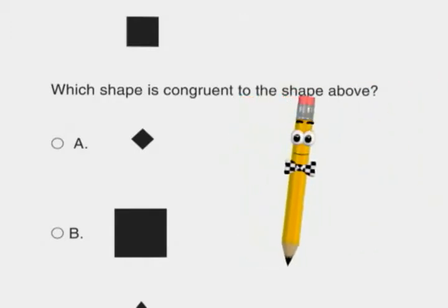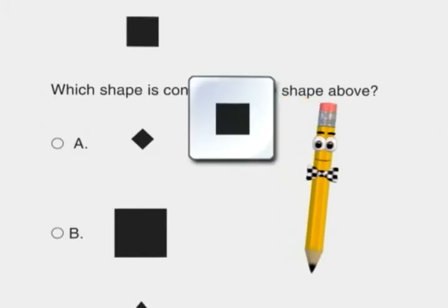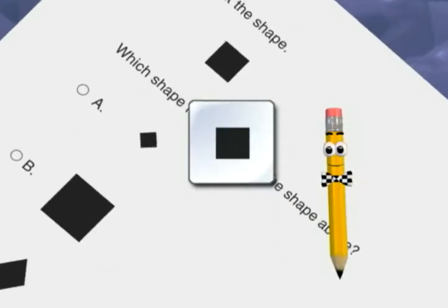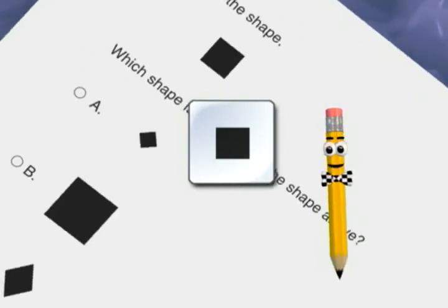Remember, congruent means the same size and shape, no matter which way the shape is turned. Look at shape A. We can turn the page to see that it is a square, but it is too small.